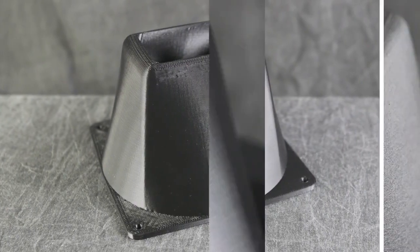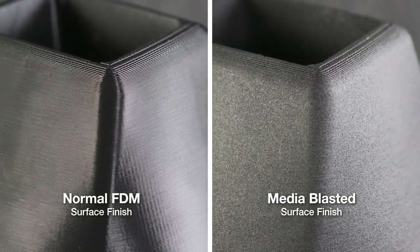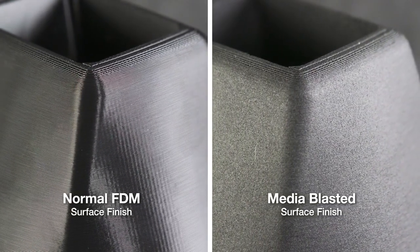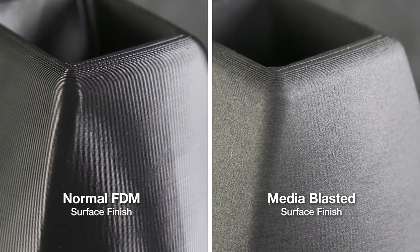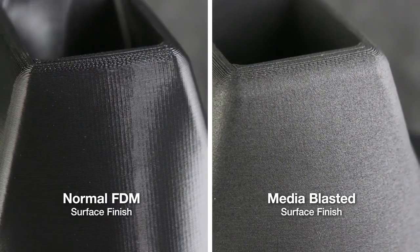The normal surface finish of FDM parts is suitable for most purposes, but in applications where a different finish is required, media blasting is an inexpensive and quick solution. It can be used to achieve the final surface appearance or as a preliminary step for subsequent finishing operations.